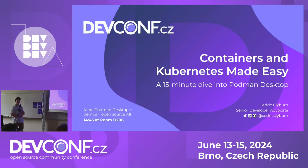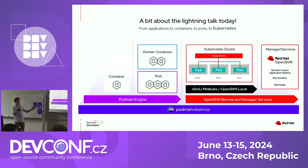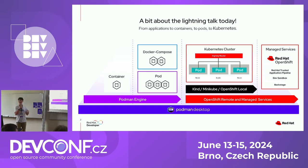I'm Cedric, a developer advocate working on developer tooling and AI. We're going to be using the amazing power of Podman, brought to you by Matthew and Dan and the entire containers team at Red Hat, to work with containers from your source code, work with pods and Docker Compose, and deploy to Kubernetes environments like Kind, Minikube, and OpenShift Local, as well as managed services like OpenShift with the developer sandbox — a free OpenShift cluster you can use at home.